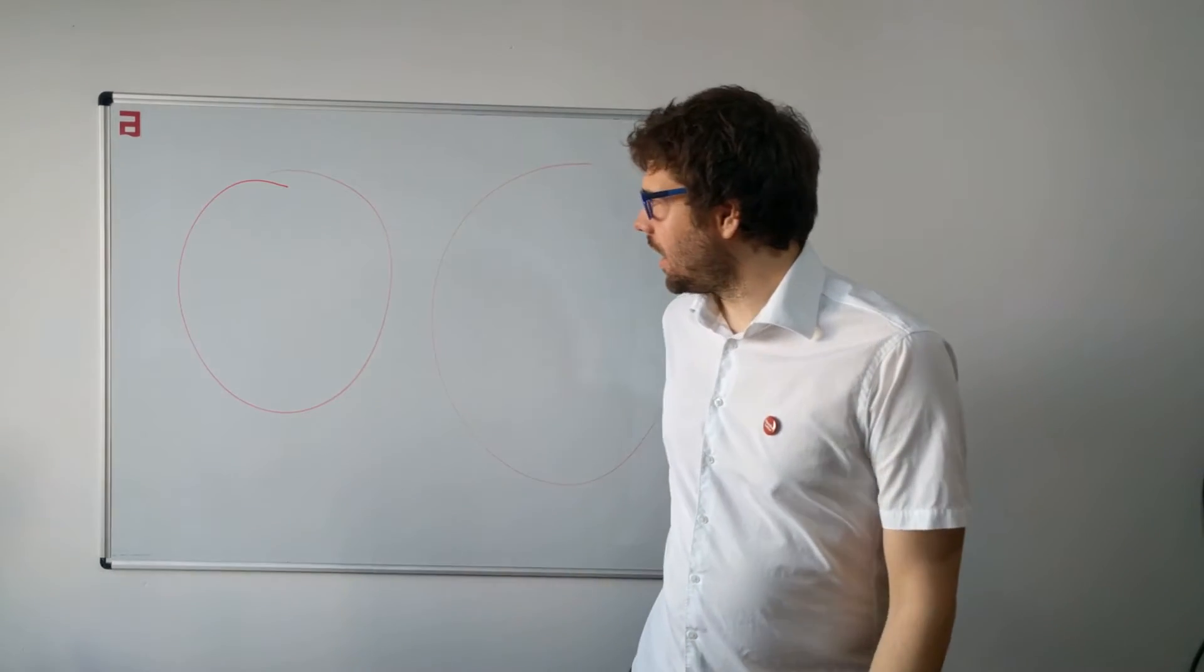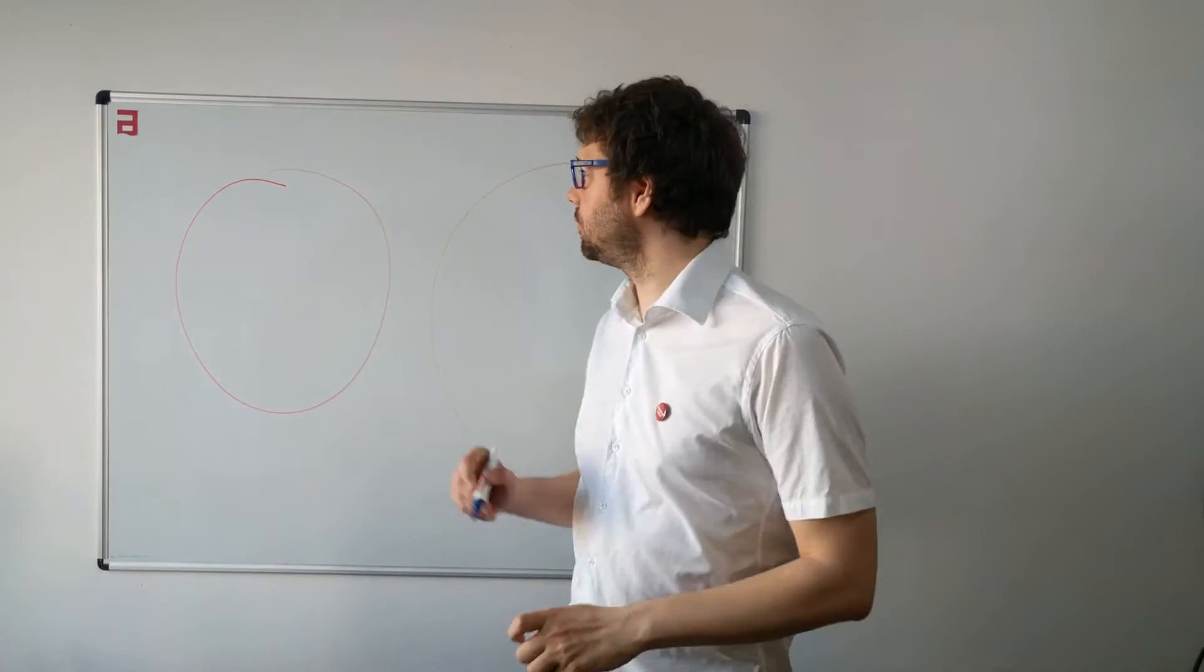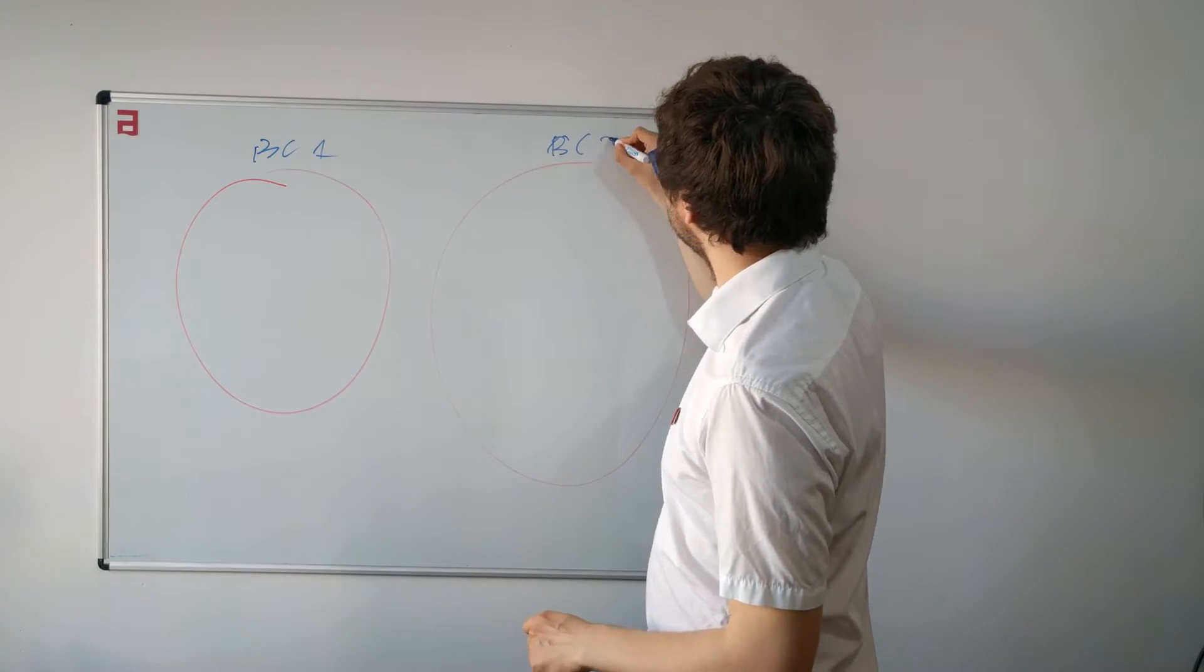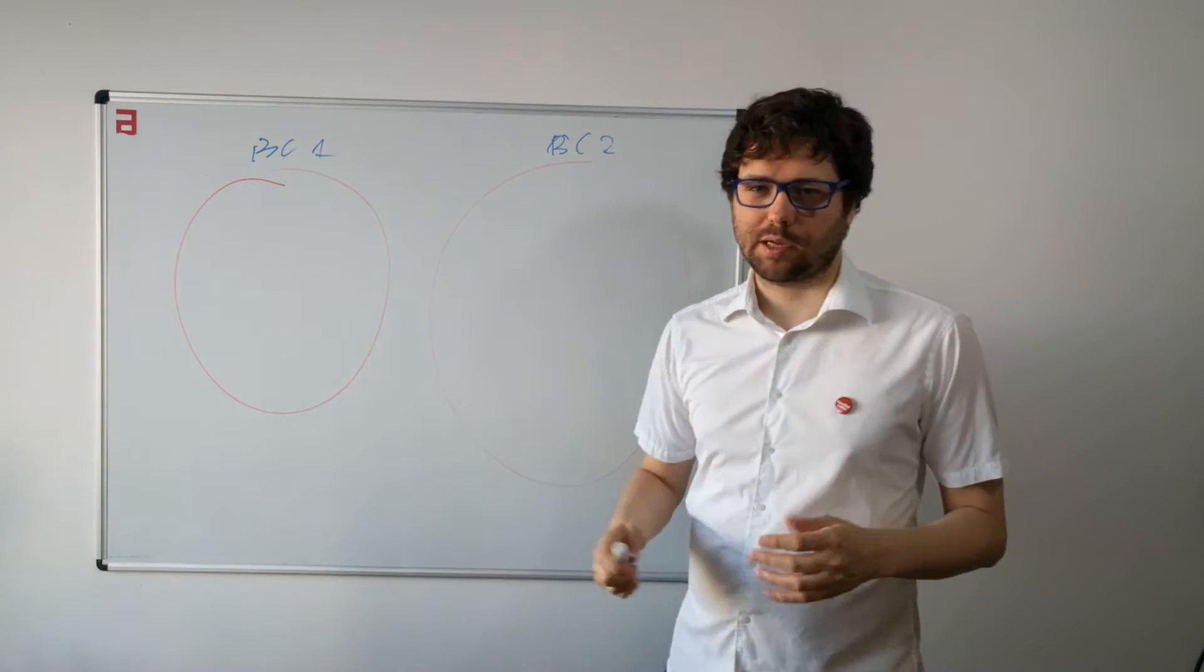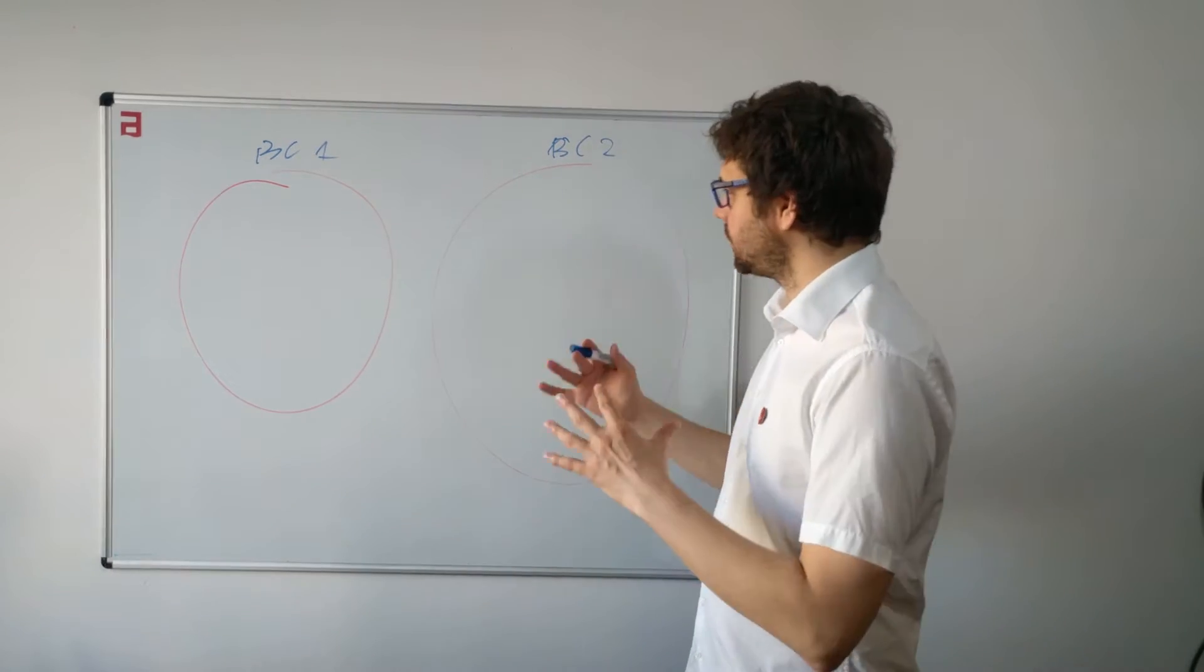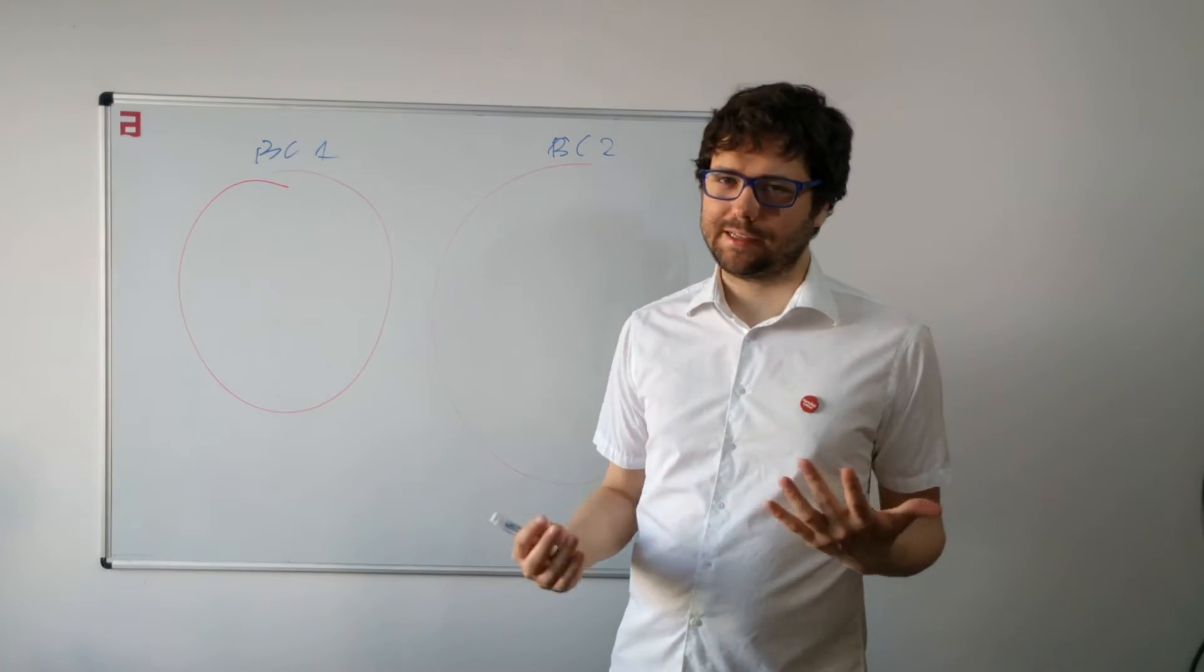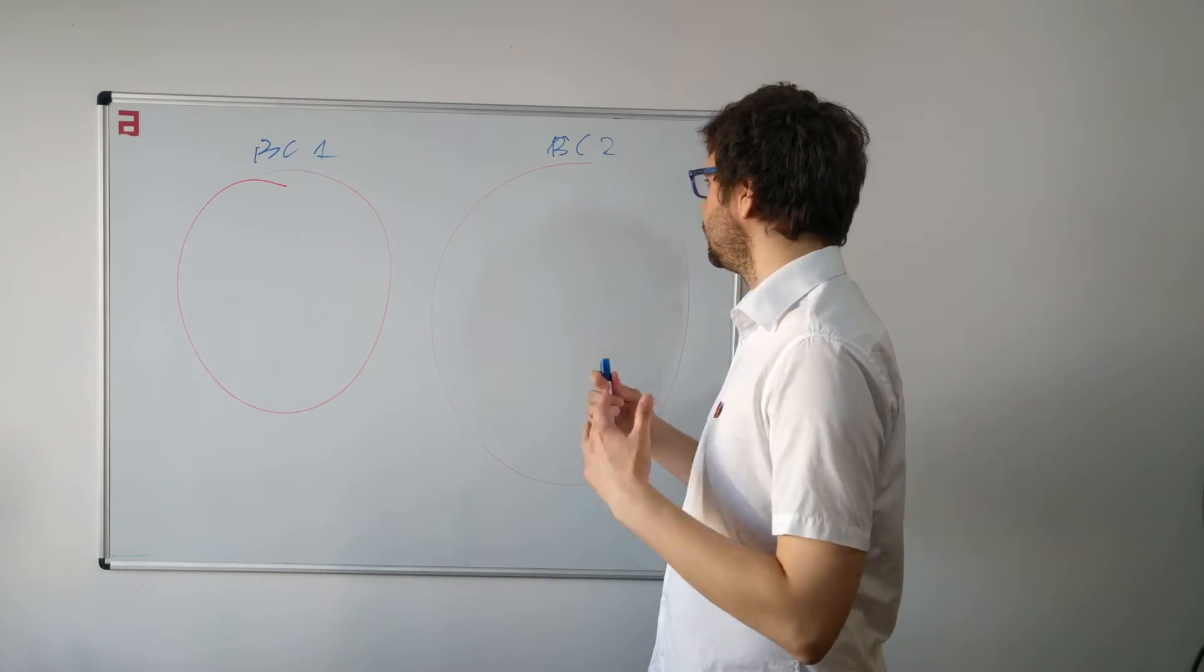So let's start. Imagine that you have two bounded contexts. So here is the first bounded context and here's the second bounded context. And what is a bounded context? What do I mean by that? It's a specific, separate part of your application in which specific words have concrete meanings, like for example product or user.